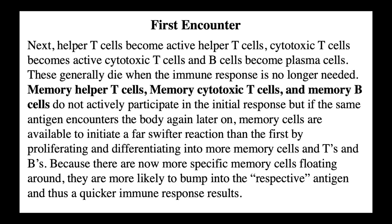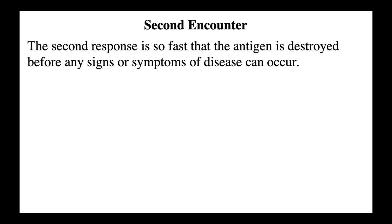Helper T-cells become active helper T-cells, cytotoxic T-cells become active cytotoxic T-cells, and B-cells become plasma cells — these generally die when the immune response is no longer needed. Memory helper T-cells, memory cytotoxic T-cells, and memory B-cells do not actively participate in the initial response, but if the same antigen encounters the body again, memory cells are available to initiate a far swifter reaction. Because there are now more specific memory cells floating around, they are more likely to bump into the respective antigen, and a quicker immune response results. The second response is so fast the antigen is destroyed before any signs or symptoms of disease can occur.